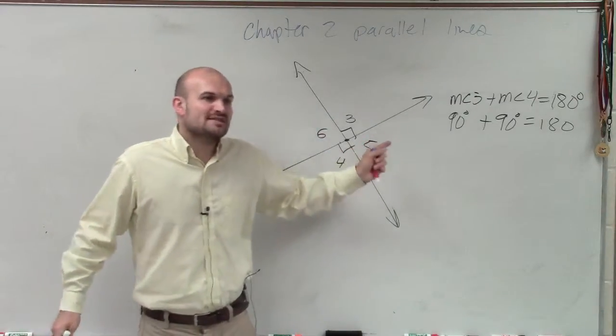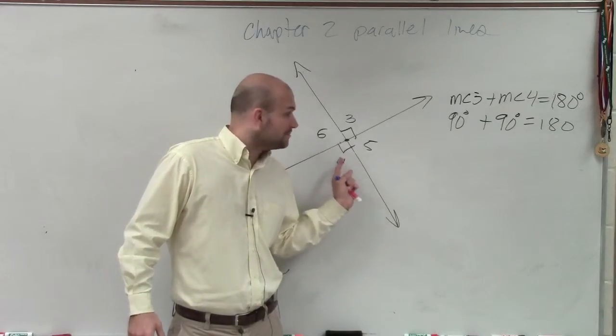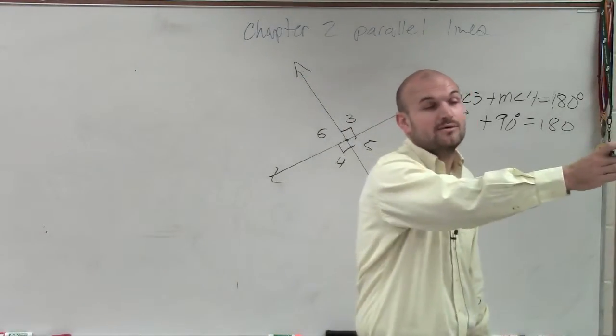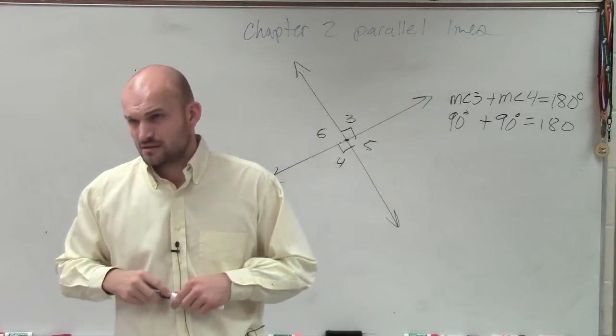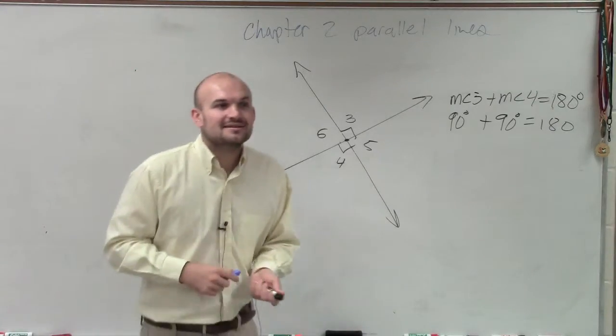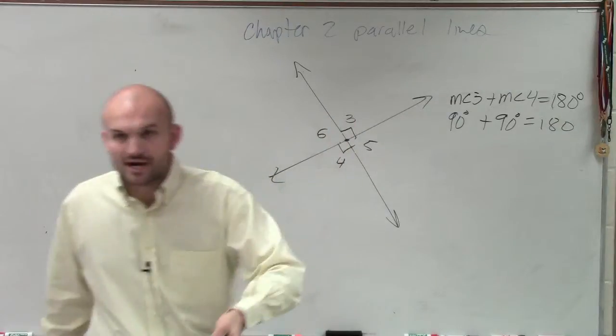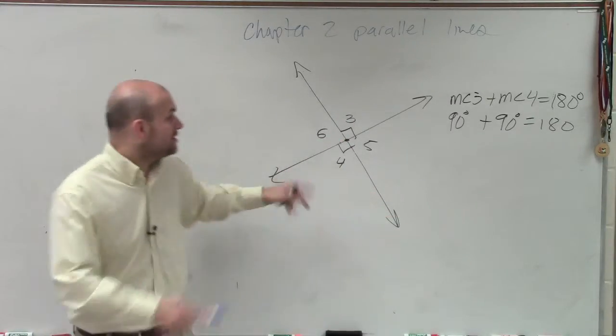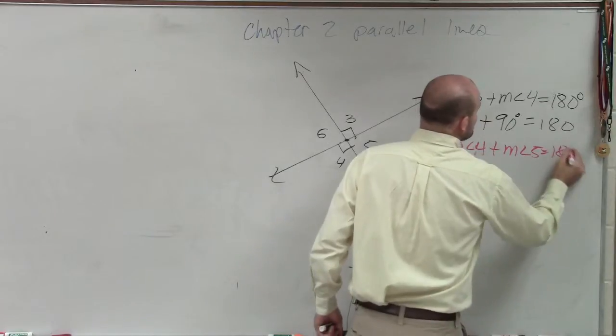Angle four and angle five are what type of angles? These two angles share the same point, are created by opposite rays. Therefore, they are a linear pair. And linear pair are what type of angles? They are adjacent. And what else? They're supplementary. So therefore, guess what? The measure of angle four plus the measure of angle five also equals 180.